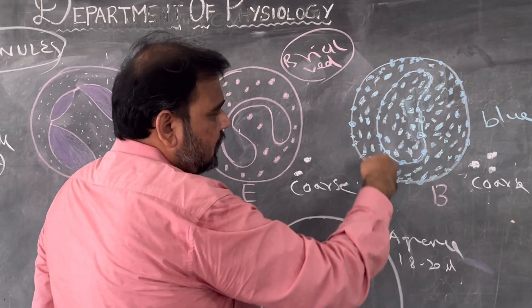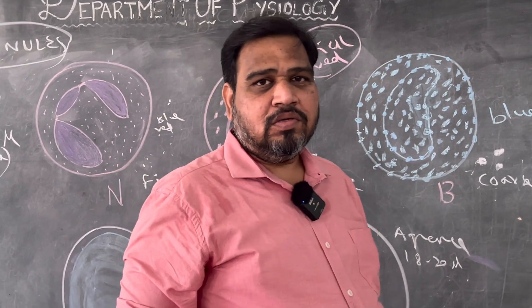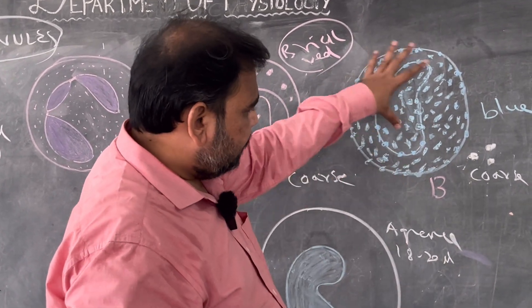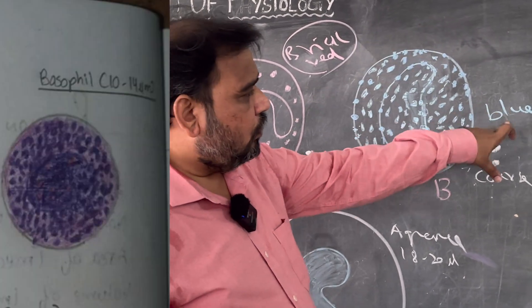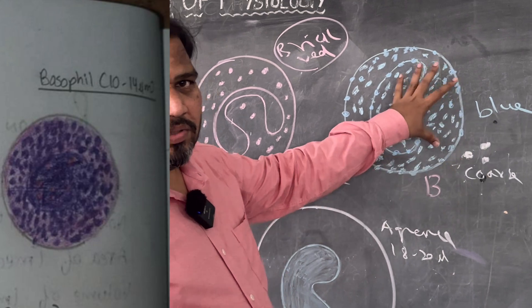The granules are so much that it is even around the nucleus. See the cell membrane, cell membrane are also full of granules. Or granules are so much that it is obstructing the vision of the nucleus as well as the cell membrane. Main thing: blue, coarse. Note it down, this is basophil.